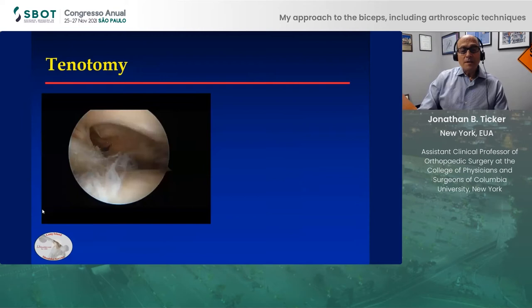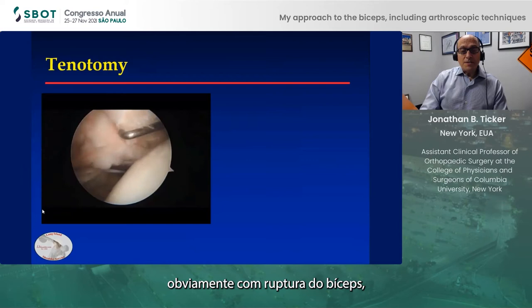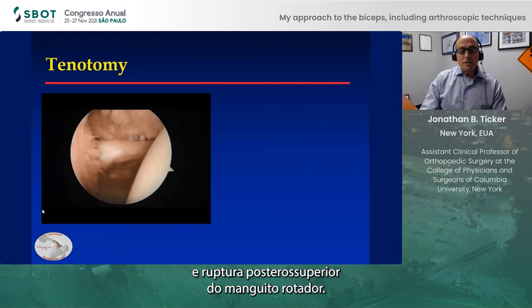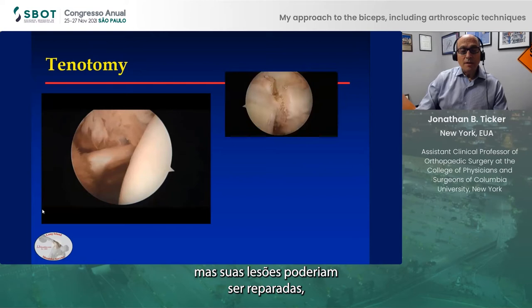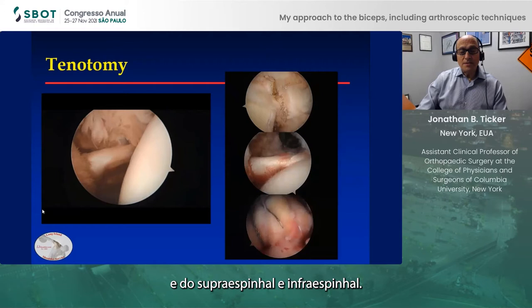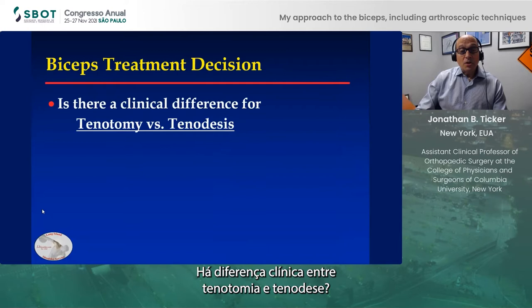Another option which I do use is a tenotomy. This is the right shoulder in a 74-year-old with obvious biceps tearing, but also a complete subscapularis tear and a posterior superior cuff tear. I know I'm going to have to do a fair amount of work in this patient, so he was amenable, and I proceeded with a biceps tenotomy, which allowed me to focus on the subscapularis as well as the supraspinatus and infraspinatus repair.